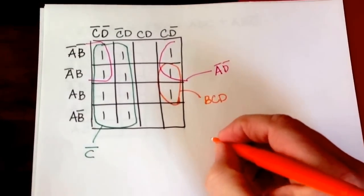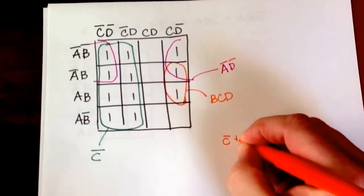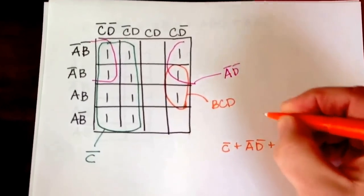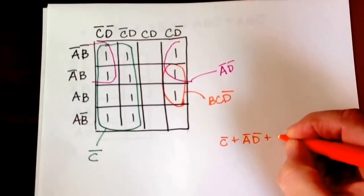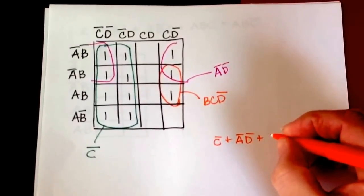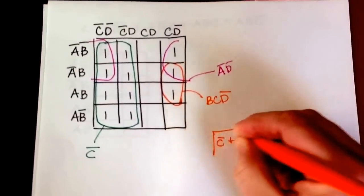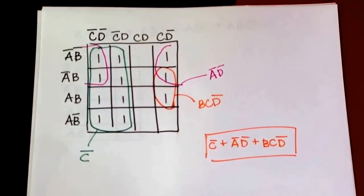So the simplified expression for this would be not C, or not A and not D, or—oops, I left the not sign up there—B and C and not D. That would be your final simplification for this one.